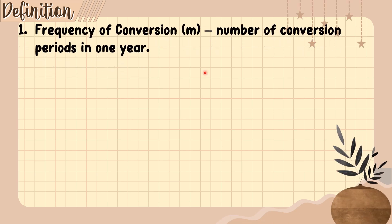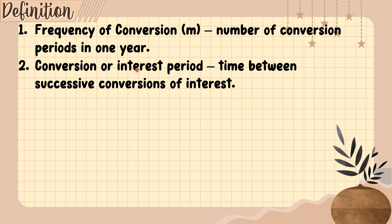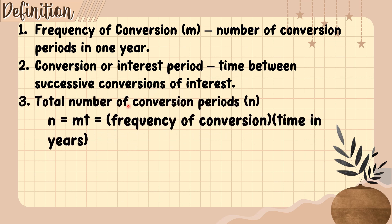Let's start with the definitions. The frequency of conversion, symbol M, is the number of conversion periods in one year. The second term is conversion or interest period — the time between successive conversions of interest. The third term is the total number of conversion periods, symbol N, with the formula: N equals frequency of conversion (M) times time in years (T).